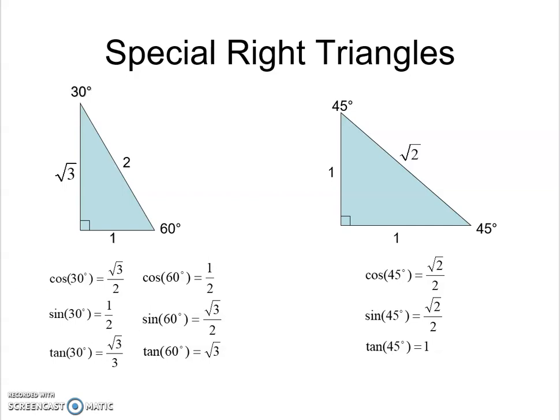For 30-60-90 how do the side lengths relate? Well if you know your short side the hypotenuse is twice that length and the long side is the square root of three times that length. When you go ahead and calculate them for cosine of 30 we get square root of three over two, for sine of 30 you get one half, and for tan of 30 you get square root of three over three.